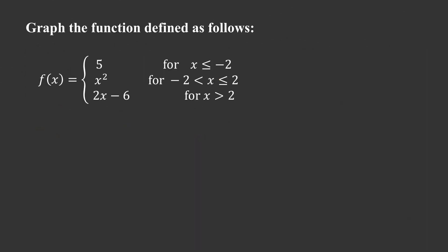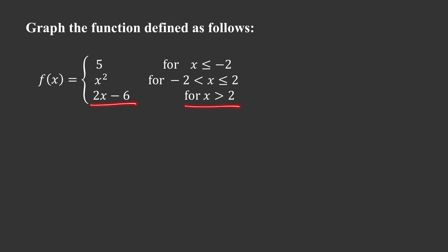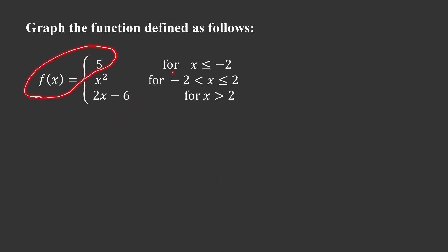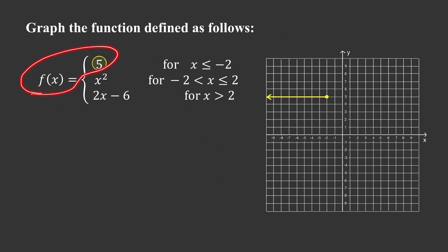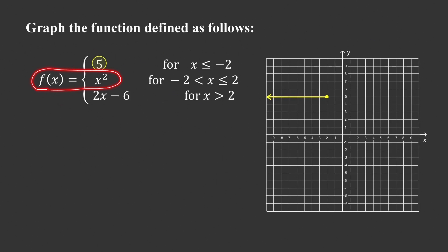In the last problem, the function f is defined using three formulas: it equals 5 (constant) for certain x values, x squared for another set of x values, and 2x minus 6 for x greater than 2. To sketch each piece, start with the constant function — a horizontal line — but end it at x equals negative 2. Since that endpoint is included, use a solid dot.